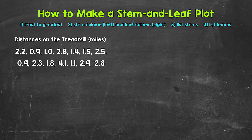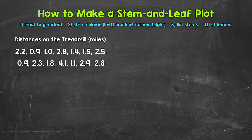So we take the data and we organize everything in a table called a stem and leaf plot. Let's jump into our example and see exactly how to do this. We have the distances that someone either ran or walked on the treadmill over the last two weeks — per day — and these are in miles. The first thing we need to do is order the data from least to greatest. This will make everything much simpler once we get to creating the stem and leaf plot.